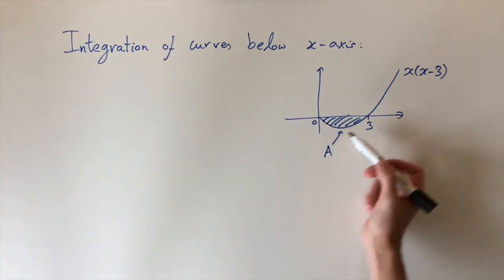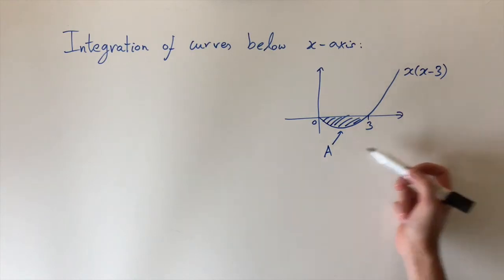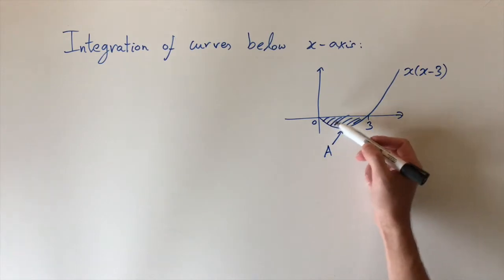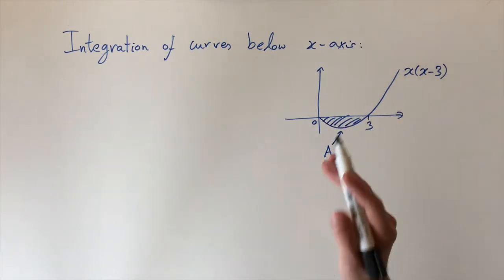However, if this function is below the x-axis, then something weird happens because if we integrate this between 0 and 3 of this function, it's not going to give us the area, it's going to give us minus of that value.